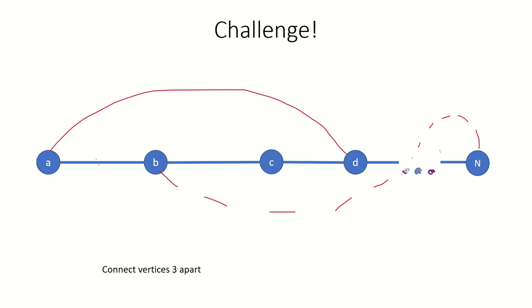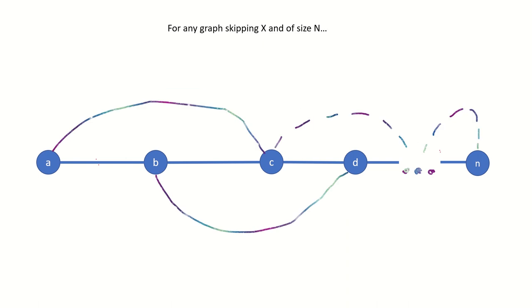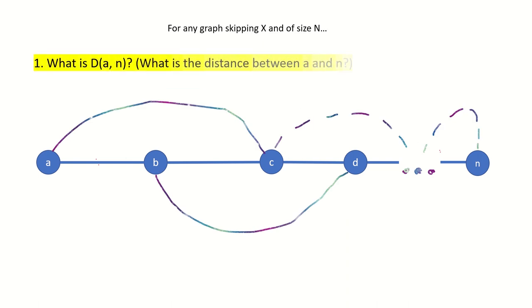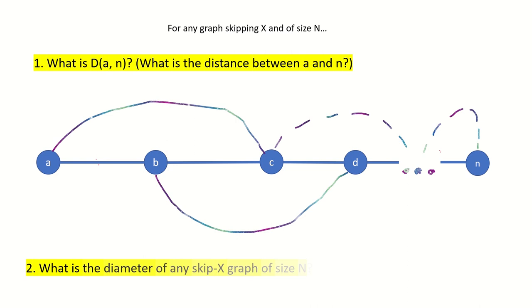We could also have chosen to start with the base graph and just add connections between vertices that are three edges apart from each other. The challenge is: what is the distance between the first and last vertex in any of the skip x graphs of size n? And a little harder, what is the diameter of any given skip x graph of size n?